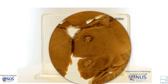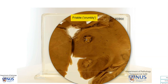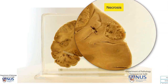We can see, for example, in this particular mass, it is relatively well demarcated from the rest of the brain parenchyma, and in this central region there is a pale geographic area which is quite friable in appearance. We see a similar appearance here, and this most likely represents necrosis. Again, we can see this geographic area of pale necrosis within this mass.